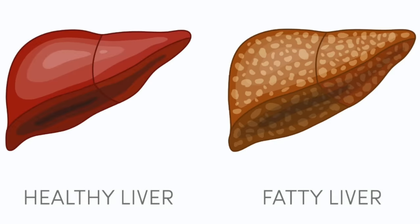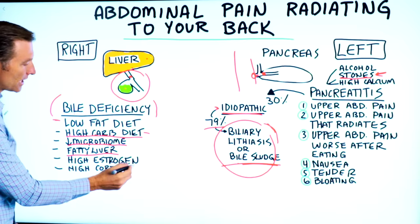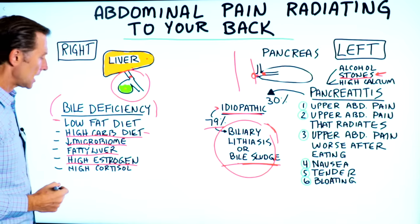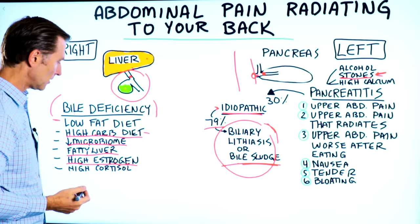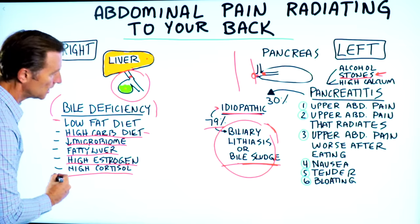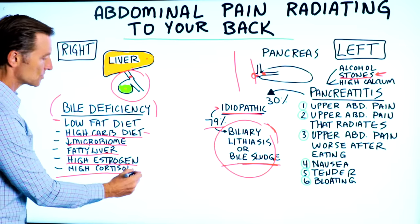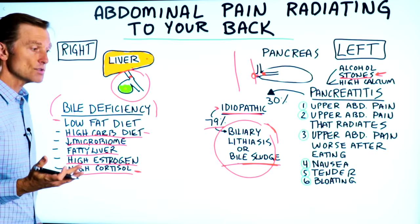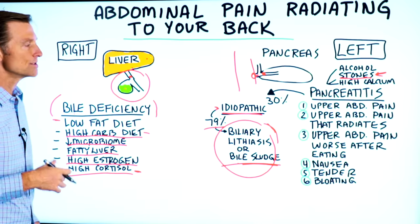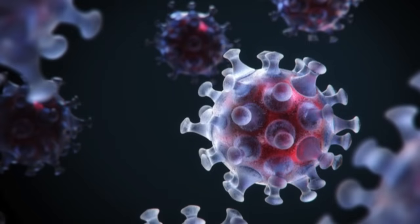A fatty liver can inhibit the production of bile. High amounts of estrogen, as in pregnancy, can alter and limit bile production. High cortisol can also inhibit bile production — this comes from stress, or from taking prednisone, which is a steroid typically used for arthritis or an autoimmune disease.